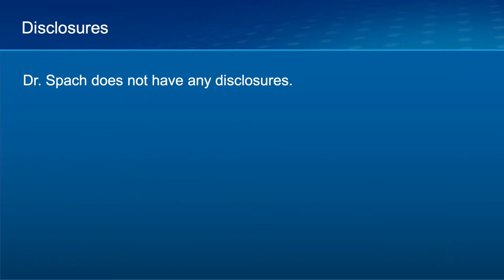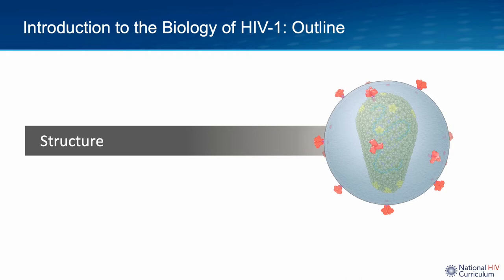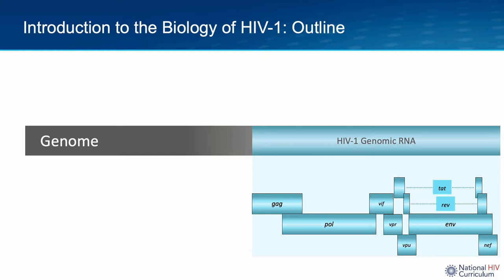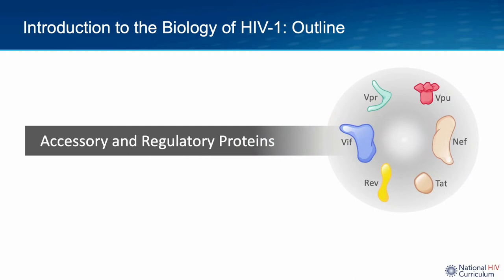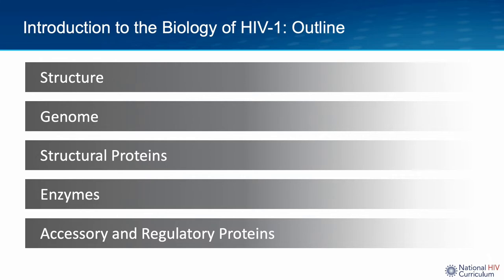This talk will begin with an overview of the main structural features of HIV, followed by a brief look at the HIV genome. Then I'll take a more in-depth look at each of the HIV proteins, including structural proteins, enzymes, and the accessory and regulatory proteins. The overview of these five topics will hopefully provide you with the foundation to understand more complex HIV-related topics, such as the HIV life cycle and the mechanism of action of antiretroviral medications. This talk will not address HIV-2, and in the following discussion, any mention of HIV will be in reference to HIV-1, which is the dominant HIV type found globally.